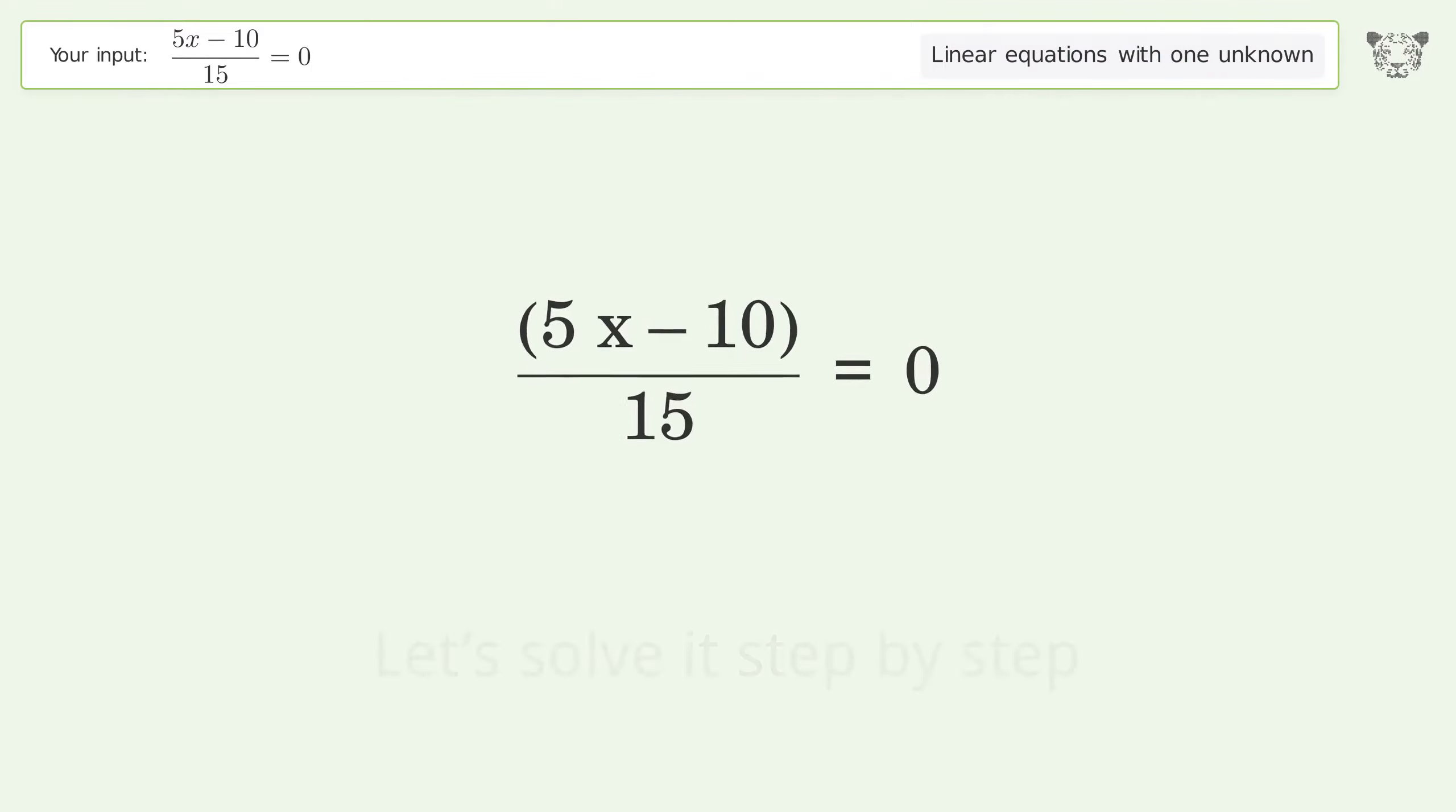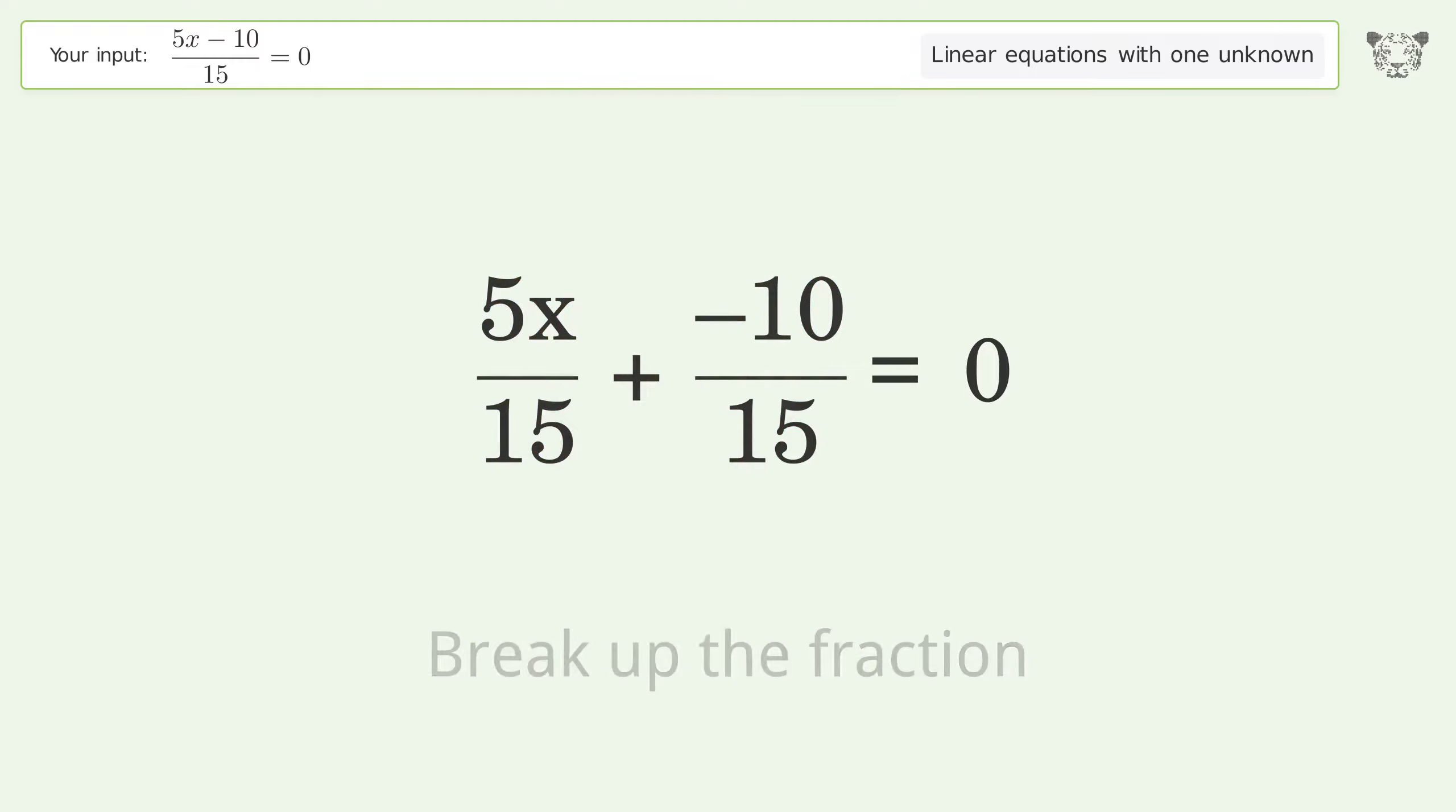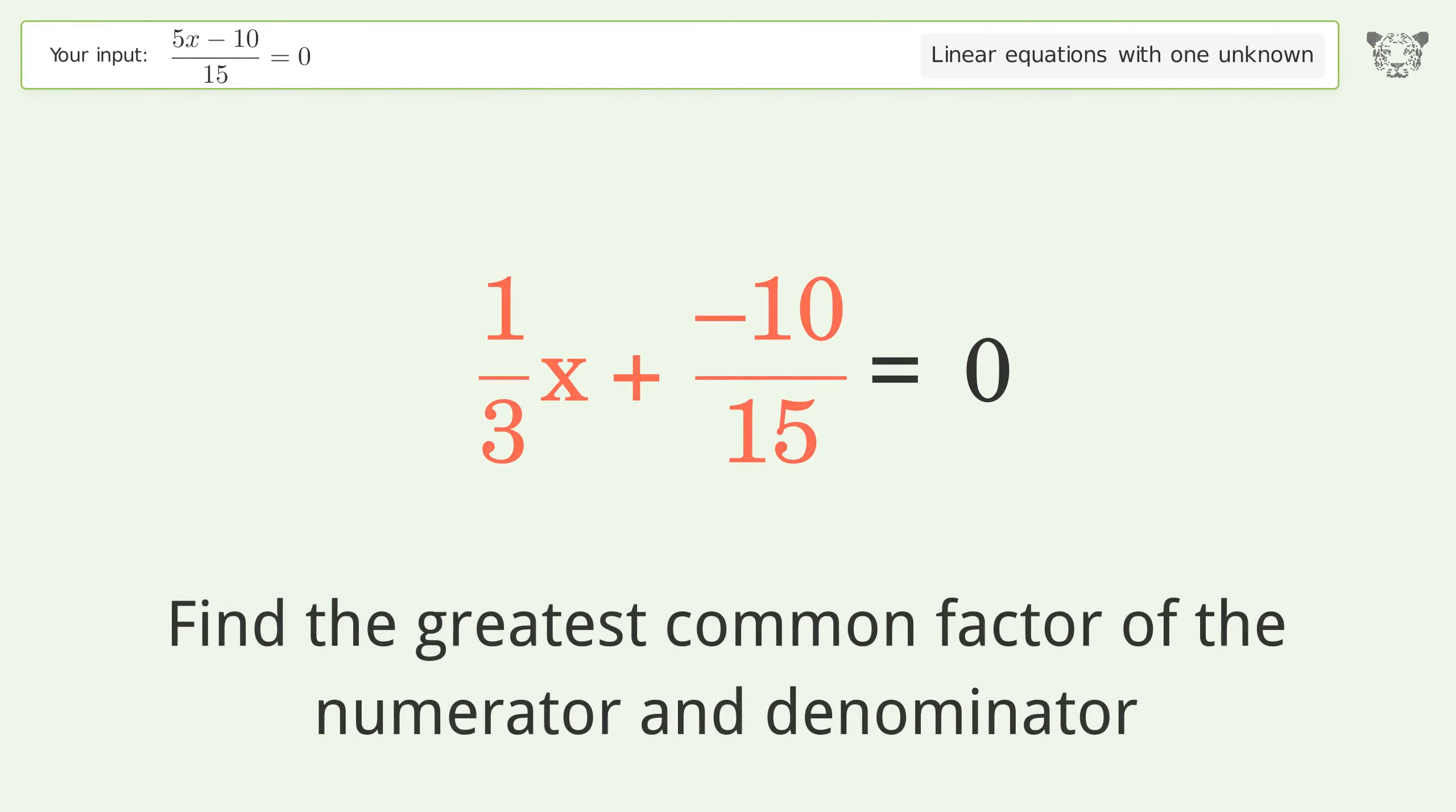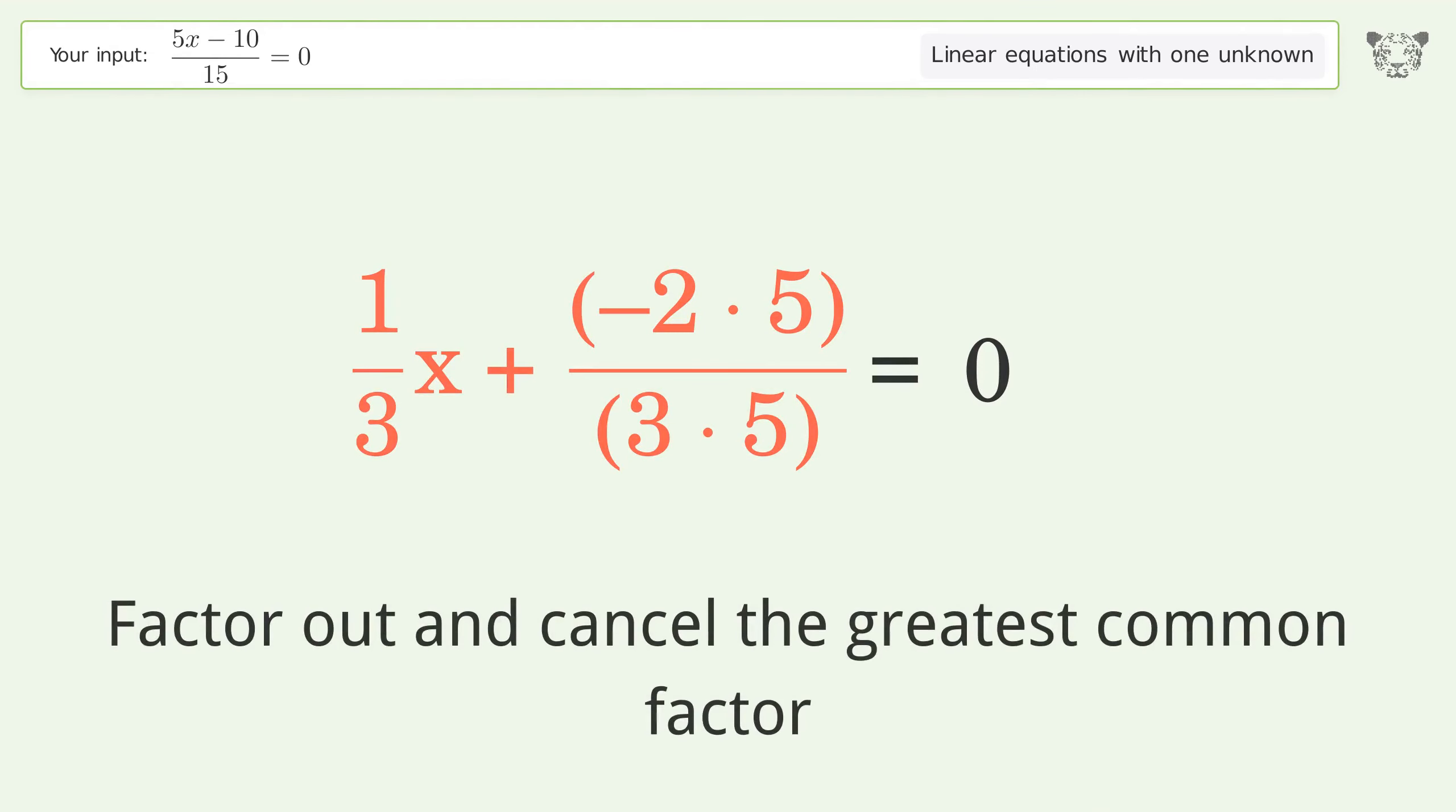Let's solve it step by step. Simplify the expression by breaking up the fraction. Simplify the fraction by finding the greatest common factor of the numerator and denominator, then factor out and cancel the greatest common factor.